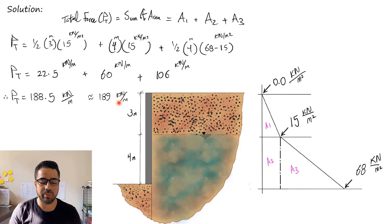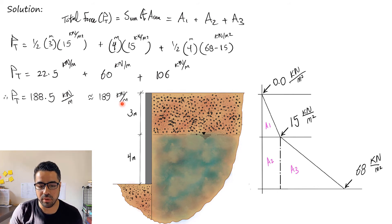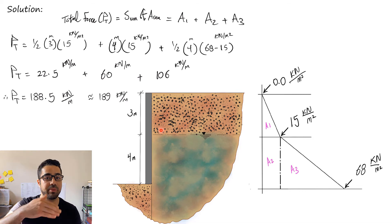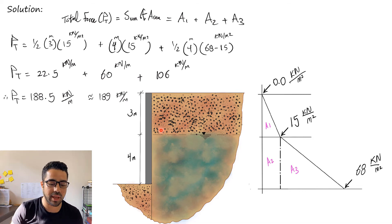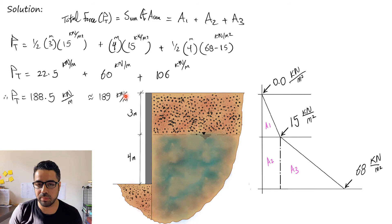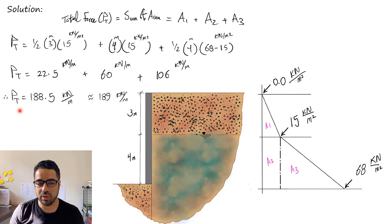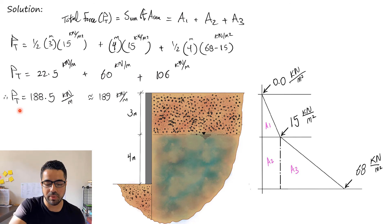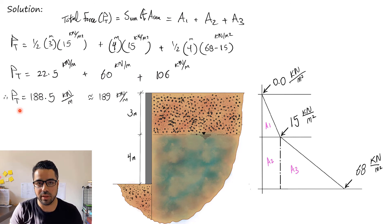The total horizontal force applied on the wall is approximately 189 kN/m. Now we need to find the location of this total force. We take moments about point Z — force times its moment arm — for each of the three areas, then set it equal to the total force times its unknown arm.